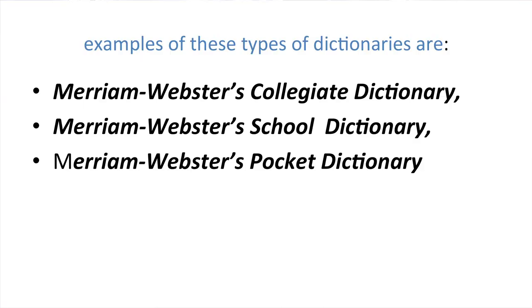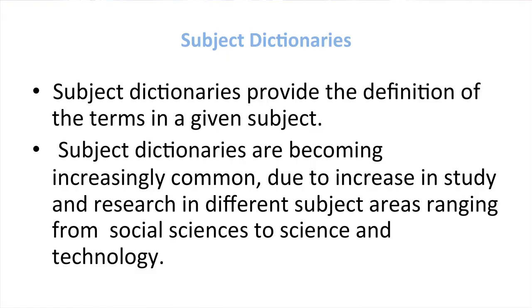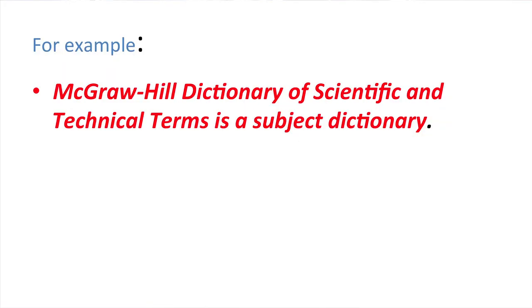Examples of these types of dictionaries are Merriam-Webster College Dictionaries, Merriam-Webster School Dictionary, and Merriam-Webster Pocket Dictionary. Subject dictionaries provide the definition of terms in a given subject. Subject dictionaries are becoming increasingly common due to increase in study and research in different subject areas ranging from social science to science and technology. For example, McGraw-Hill Dictionary of Scientific and Technical Terms is a subject dictionary.